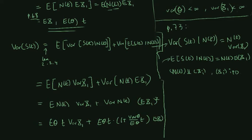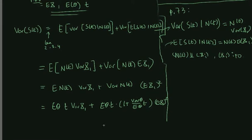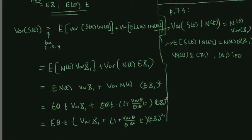Gathering terms, we get the variance of S(t) equal to the mean of theta times t, multiplied by a bracket containing the variance of X1 plus 1 plus the variance of theta divided by the mean of theta, times t, times the mean of X1 squared. This is the expression for the variance of S.